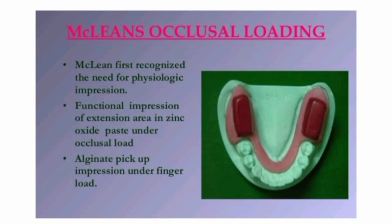This technique is called McLean's technique. There are some disadvantages: the little finger pressure does not simulate the pressure produced by the masticatory forces, so the recorded functional impression is not under that much compression. The next disadvantage is that the contact present between the stock tray and the occlusal rim does not permit the finger pressure applied to the tissues to record during the masticatory forces.